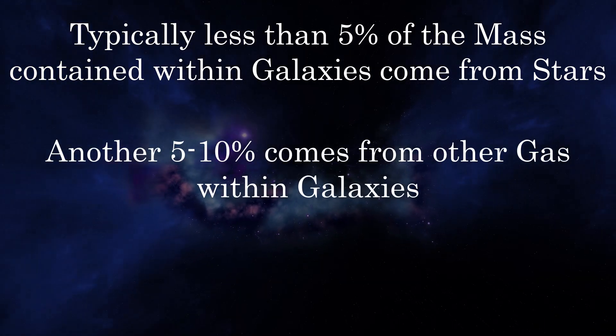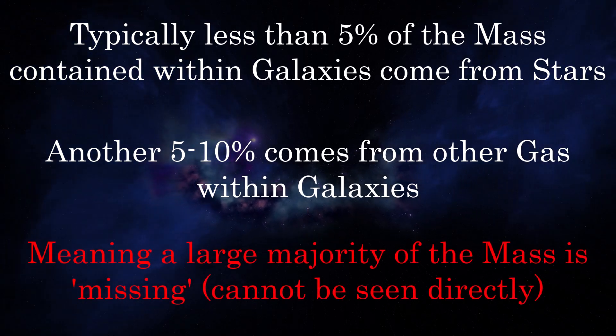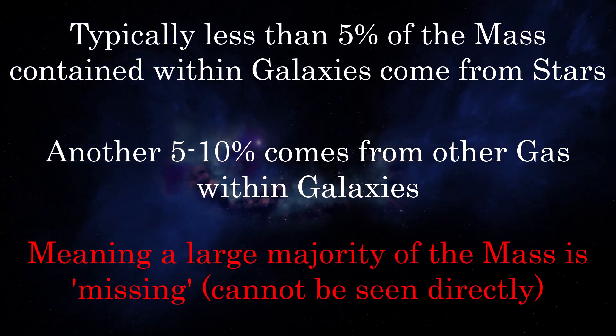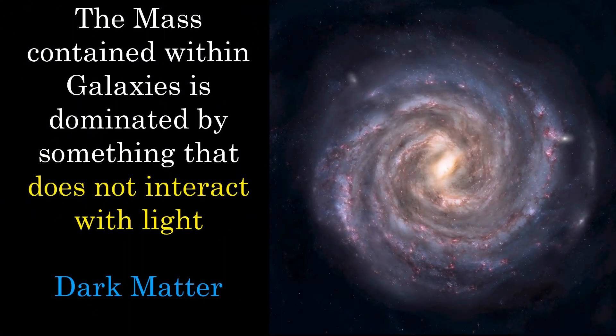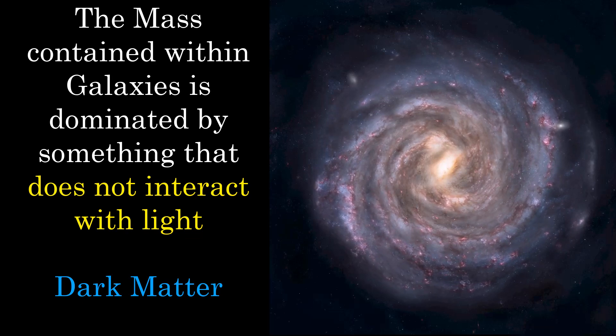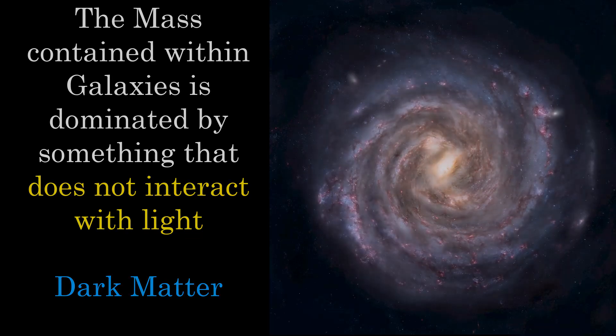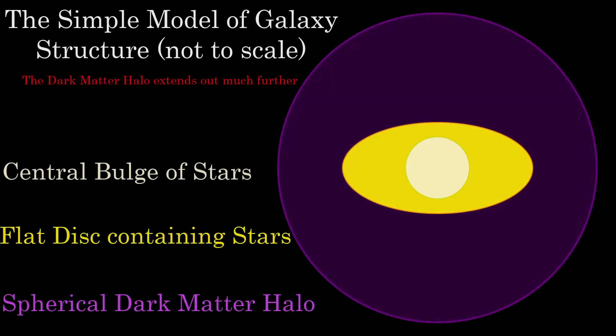The missing mass does not interact with photons of light, otherwise we would be able to detect it in some frequency range, hence it must be dark. Therefore the main source of mass within galaxies and the universe itself is a mysterious and unknown form of mass, which has since been coined dark matter. Spherically distributed dark matter halos around galaxies is able to explain the observed flat rotation curve and missing mass compared with stars.